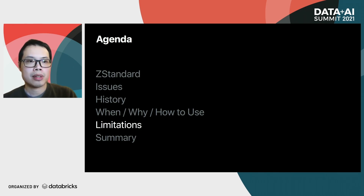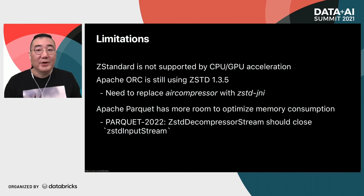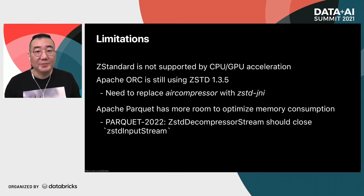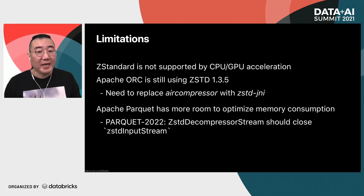There are some limitations. There is a hardware acceleration technique for Spark workloads from Intel and NVIDIA, but Zstandard is not yet supported by CPU and GPU acceleration. Apache ORC is still using Zstandard-JNI 1.3.5 via Aircompressor — we can catch up to the latest Zstandard-JNI library by replacing it. Apache Parquet also has more room to optimize memory consumption — there is a Parquet issue (PARQUET-2022) that is not yet released, but Apache Spark 3.2 will bring this patch in.